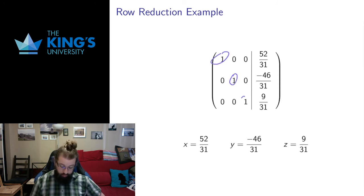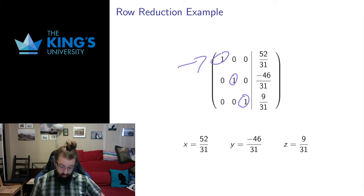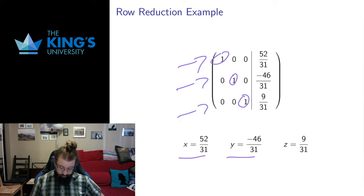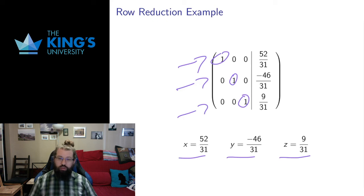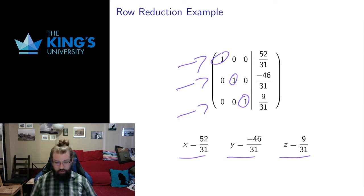Now I have these leading 1s in columns of all 0s, and I can read off the solution. This row says x has to be 52 over 31. This row says y has to be negative 46 over 31. This row says z has to be 9 over 31. That's what the row reduction algorithm does — just by finding leading 1s and clearing them, it turns the matrix into something where we can read off the solutions. It's algorithmic; it keeps track of all the information, and these basic operations will solve any linear system we throw at it.